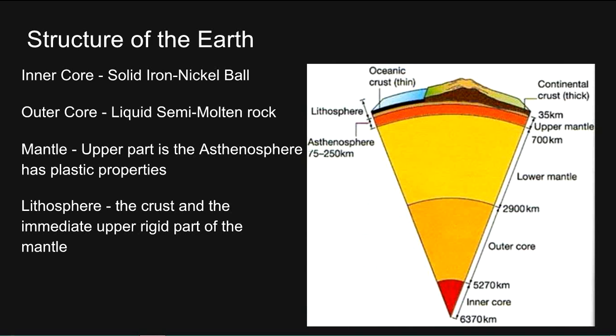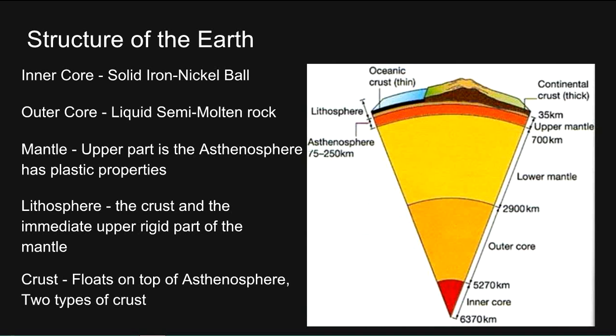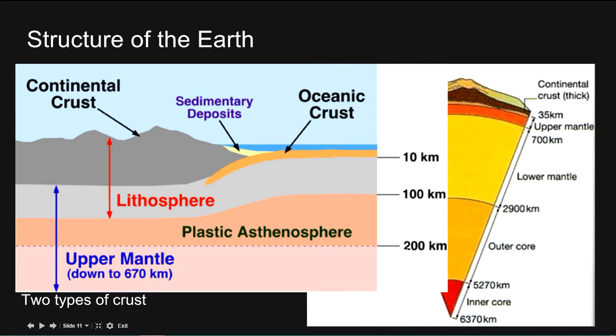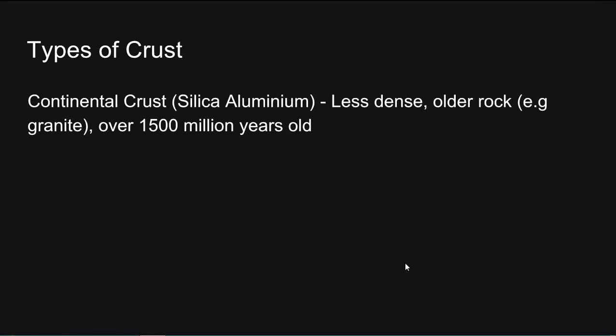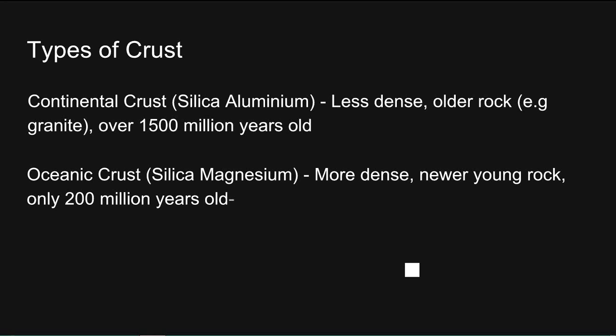Then we have the lithosphere, which is the crust and the immediate upper rigid part of the mantle. And finally, the crust, which floats on top of the Asthenosphere. There are two types of crust. Continental crust is silica-aluminium in composition, less dense, made of older rocks such as granite, over 1,500 million years old. Oceanic crust is silica-magnesium in composition, around 6 to 10 kilometres thick, a younger rock — only around 200 million years old.